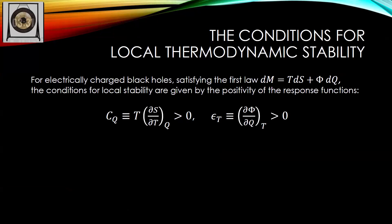For electrically charged black holes, local stability requires two conditions: positivity of heat capacity — the black hole temperature increases as it grows, ensuring it radiates excess energy and returns to its previous state — and positive electric permittivity, meaning the electric potential difference between the horizon and infinity must increase when the electric charge increases, making it harder for the black hole to gain more charge. These two conditions follow from maximizing entropy under fluctuations in charge and energy. The question is: can thermodynamically stable black holes exist in asymptotically flat spacetime?